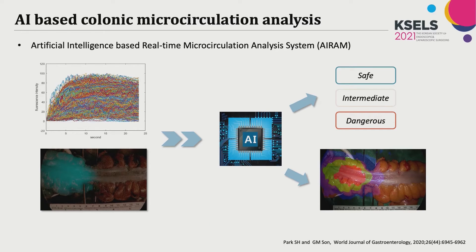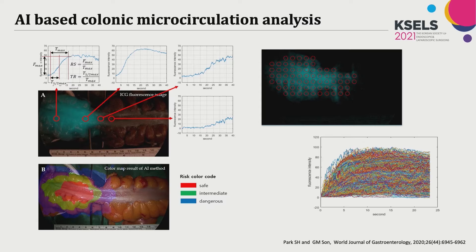The AI-based program can assist surgeons by performing real-time analysis and delivering information in a color map, allowing surgeons to determine microcirculation status as safe or dangerous regions. We have developed a brand new smart AI program that can automatically analyze 200 different points in one ICG video within just one minute. The great variety of image patterns makes it necessary to rely on artificial intelligence to analyze colonic microcirculation in real time.